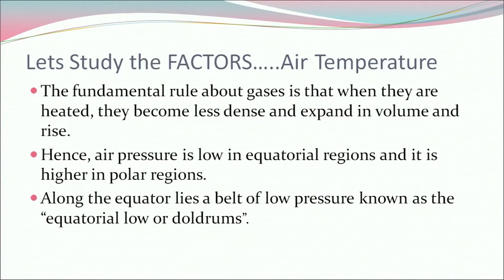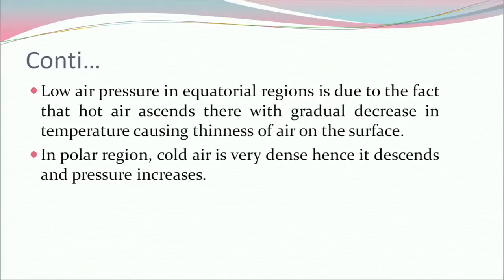Now let's study the factors. First, air temperature. The fundamental rule about gases is that when they are heated, they become less dense and expand in volume and rise. Hence air pressure is low in equatorial regions and it is higher in polar regions. Along the equator lies a belt of low pressure known as the equatorial low or doldrums. The low air pressure in the equatorial region is due to the fact that hot air ascends there with gradual decrease in temperature causing thinness of air on the surface. In polar regions, cold air is very dense, hence it descends and pressure increases.